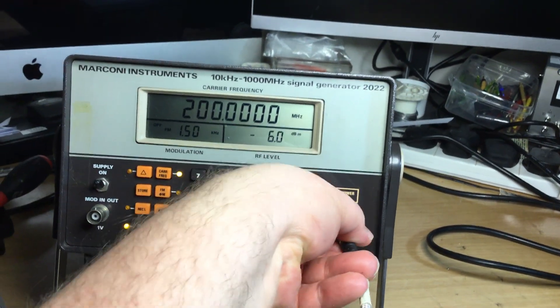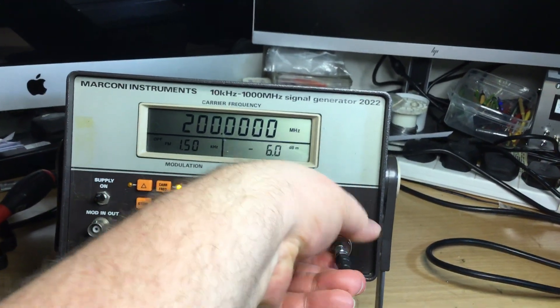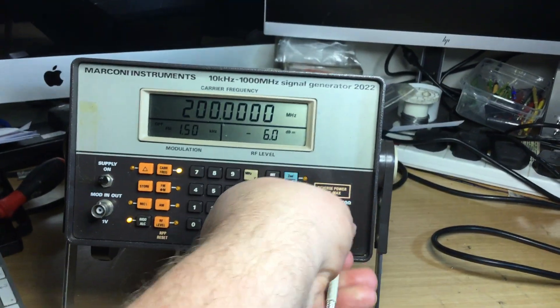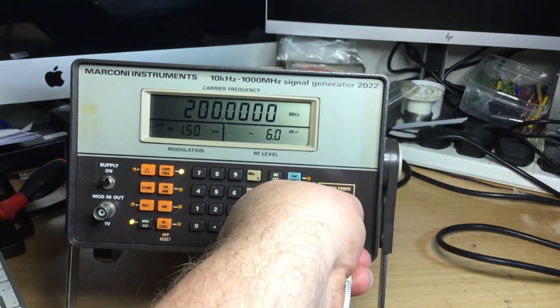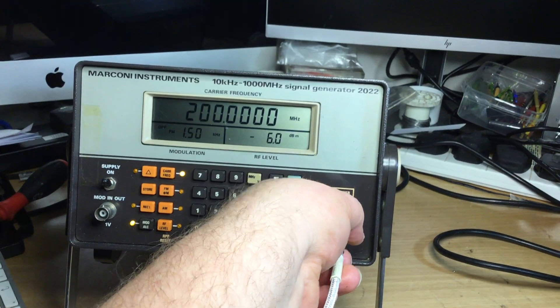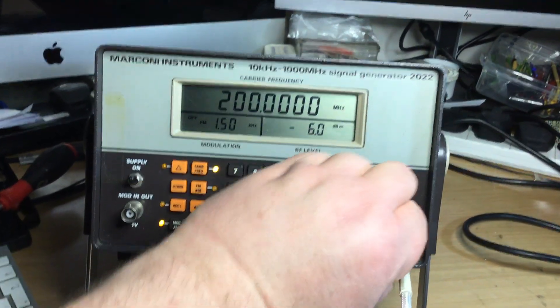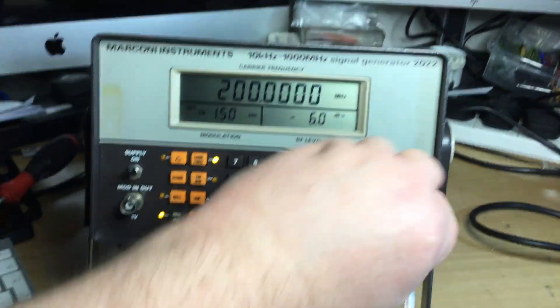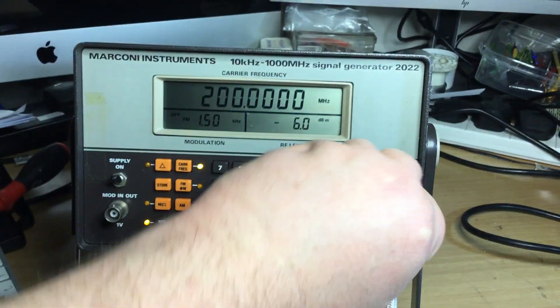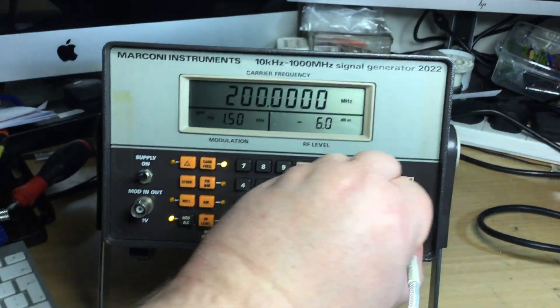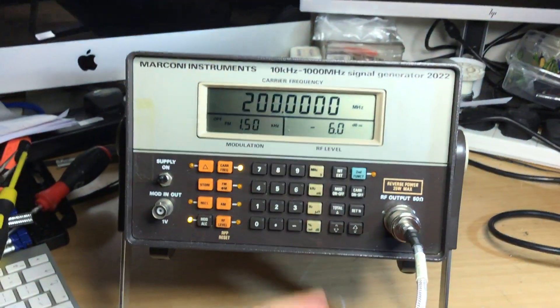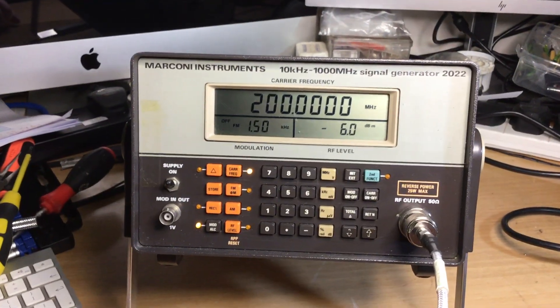Sometimes there's a bit of a delay on some instruments when you select a level or a frequency, depending on what resolution you've got it set to. It doesn't sort of round up or round down on some instruments unless you're entering the exact value.